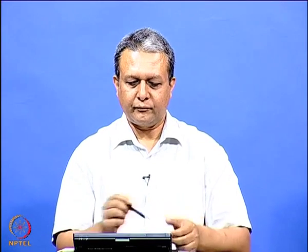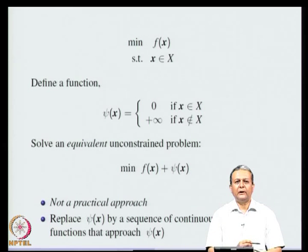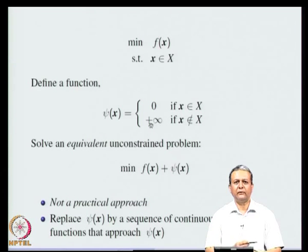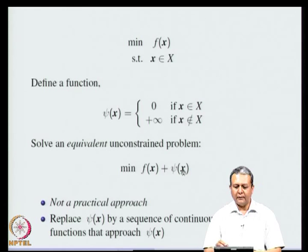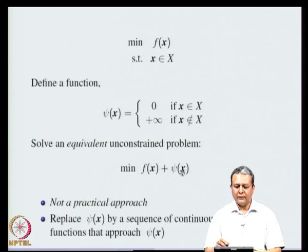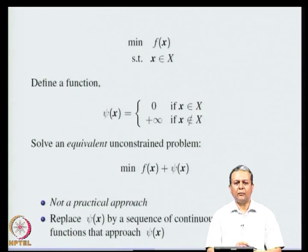Hello, welcome back. In the last lecture, we started discussing about penalty function methods. The idea is that if we want to minimize a function f(x) subject to the constraint that x belongs to the set X, we define a function ψ(x) which takes the value 0 when x belongs to X and plus infinity otherwise. We then solve the unconstrained problem of minimizing f(x) + ψ(x), and at the solution x*, ψ(x*) = 0, giving f(x*) as the optimal objective value.